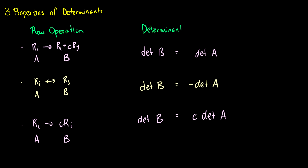I'll use a 2×2 example to demonstrate this. We start with the matrix [1, 2; 0, 3]. We add two times the second row to the first row, giving us [1, 8; 0, 3]. The determinant of the first matrix is 1 times 3 minus 2 times 0, which is 3. The determinant of the second is 1 times 3 minus 8 times 0, which is also 3. This example shows they're the same — though of course this isn't a formal proof.